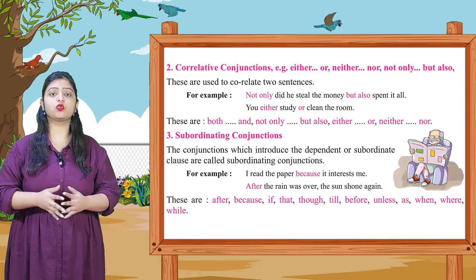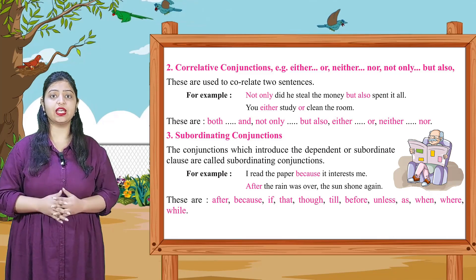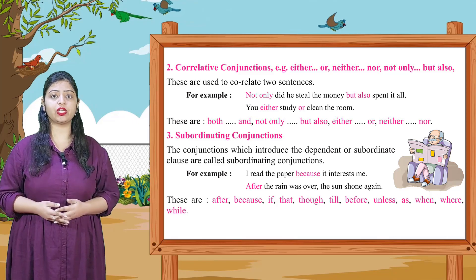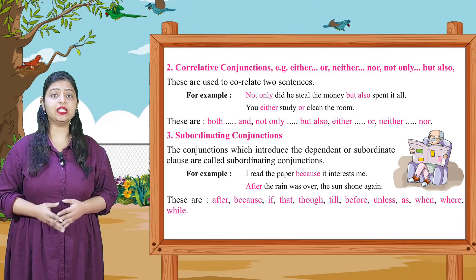So students, correlative conjunctions are correlated with each other, meaning they are used together, like either, or, neither, nor, etc. Now let's look at the third kind.